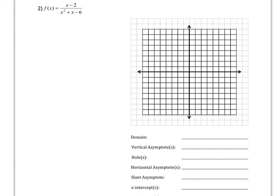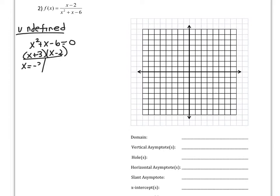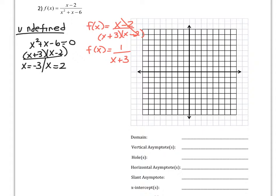Now we're going to do the same thing for the next example. The first thing is to find where this function is undefined — where the denominator x squared plus x minus 6 equals zero. I'm going to factor, and my undefined values are negative 3 and 2. Now I need to see if any of those are vertical asymptotes or holes, so I'm going to simplify the original function. The x minus 2 in the numerator cancels with the x minus 2 in the denominator. So 2 is my hole because that's what crossed off, and negative 3 is my vertical asymptote.